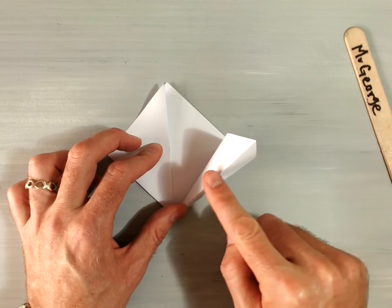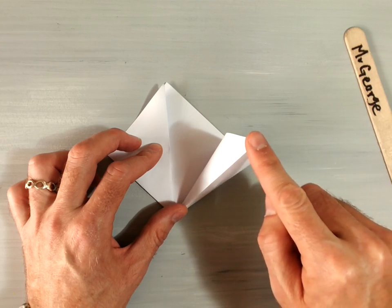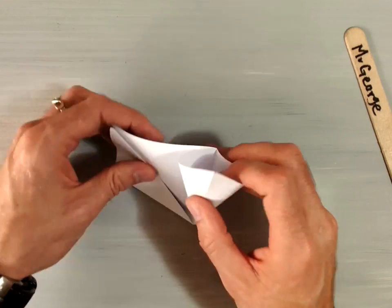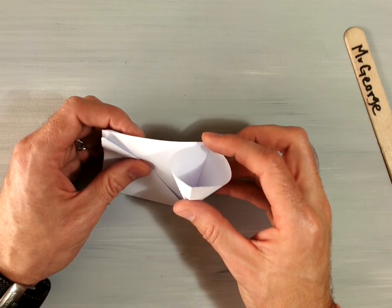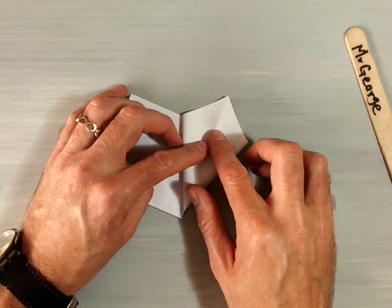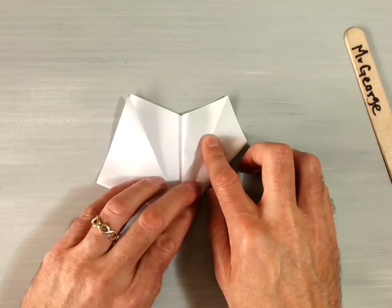And you're going to take this edge here that's pointing up in the air, and you're going to bring it down right along this line here that's underneath that pocket. So if I do that, it's called a squash fold, and it will look something like this.